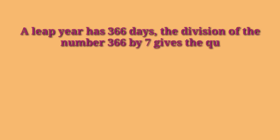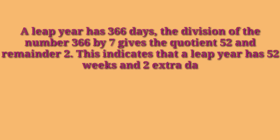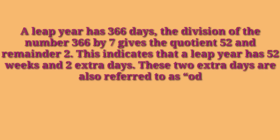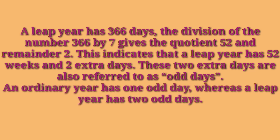A leap year has 366 days. The division of 366 by 7 gives quotient 52 and remainder 2, indicating that a leap year has 52 weeks and 2 extra days. These 2 extra days are also referred to as odd days. So an ordinary year has 1 odd day whereas a leap year has 2 odd days.